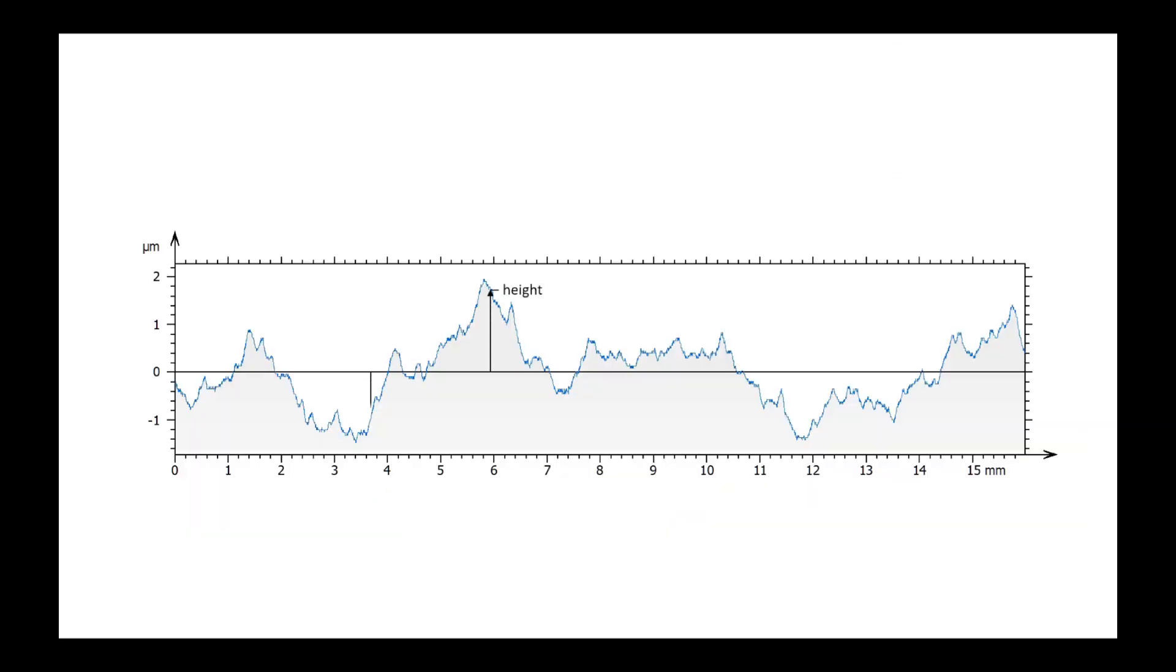Many parameters are obtained by summing a function of heights. For example, on a profile, the RA parameter is the sum of the absolute values of the heights. For the RQ parameter, it is the sum of the squares of the heights, and so on. All heights are referenced to the mean line, which is obtained by filtering.